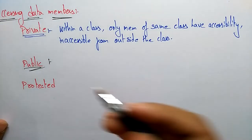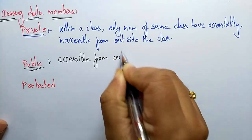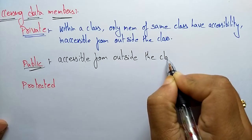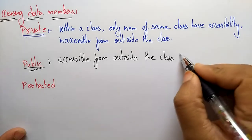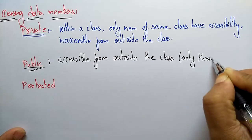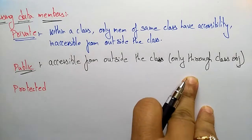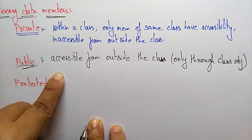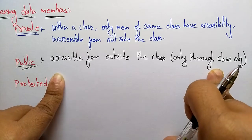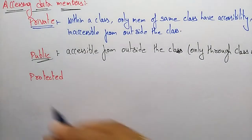Public means anyone can access it — it is accessible outside the class as well. However, to access those variables from outside the class, you can only do so through class objects. So variables declared as public can be accessed from outside the class, but only with the help of class objects.